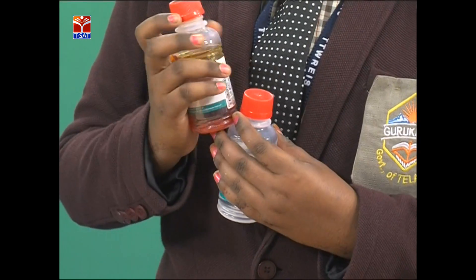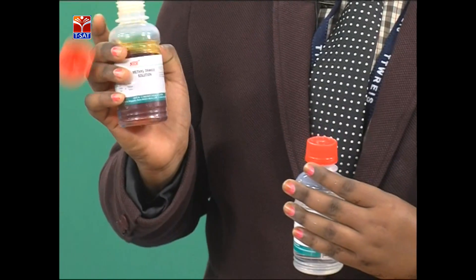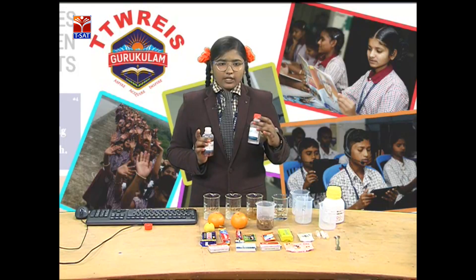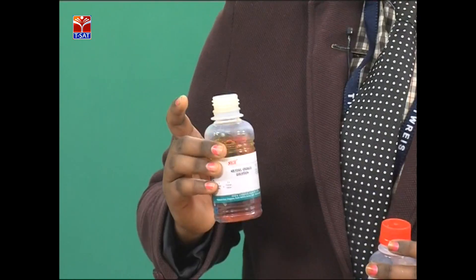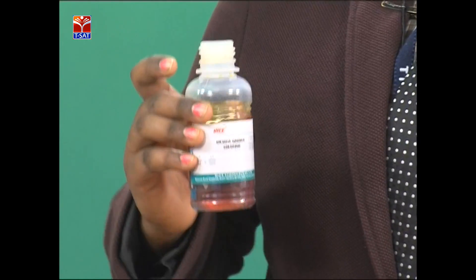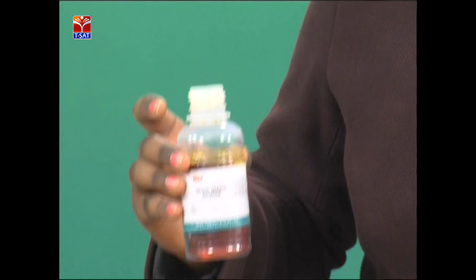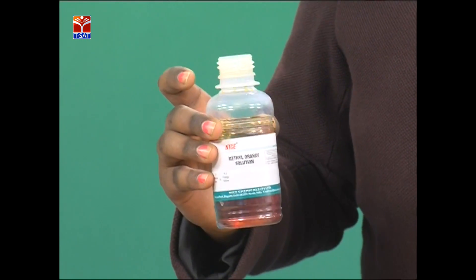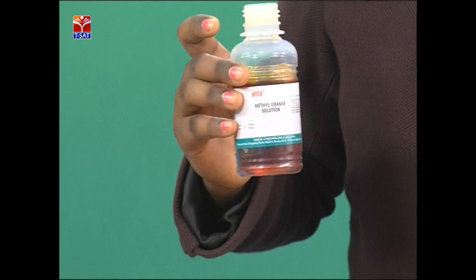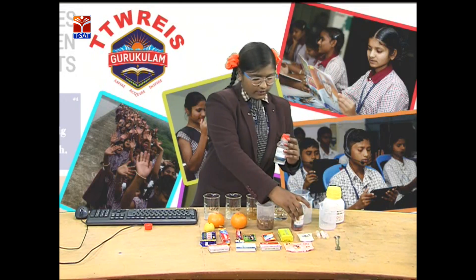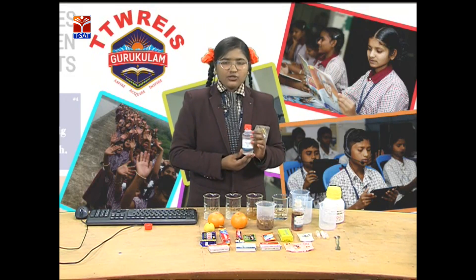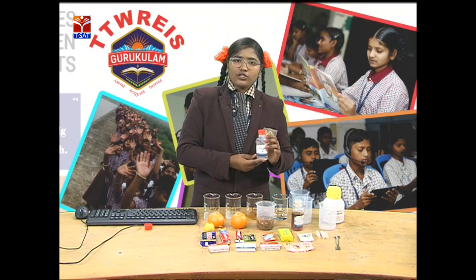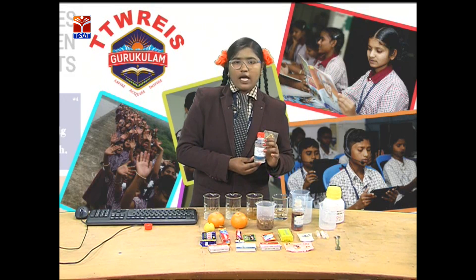Going to the solution indicators, we have two types: methyl orange solution and phenolphthalein solution. If methyl orange solution is added to any solution and that solution turns red, it is called an acid. If phenolphthalein solution is added to any solution and that solution turns pink, it is called a base.